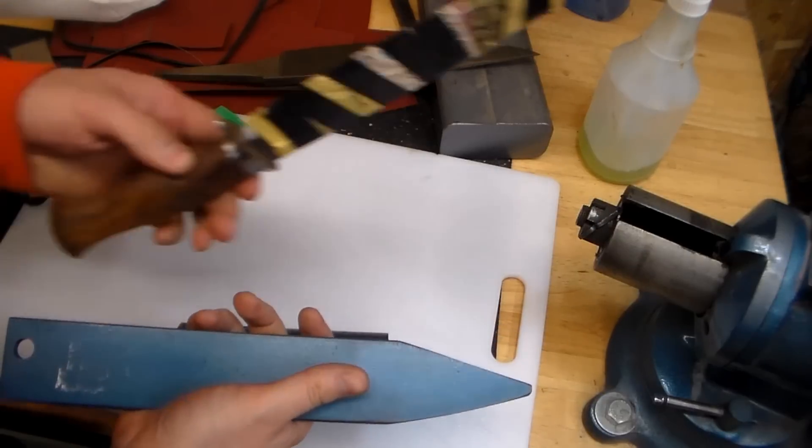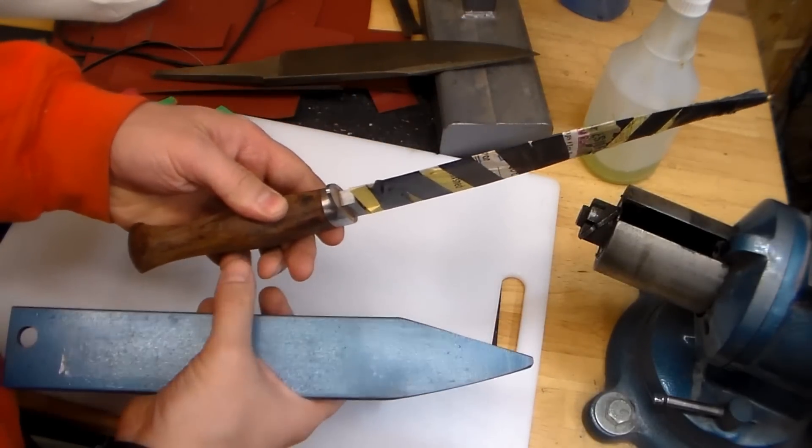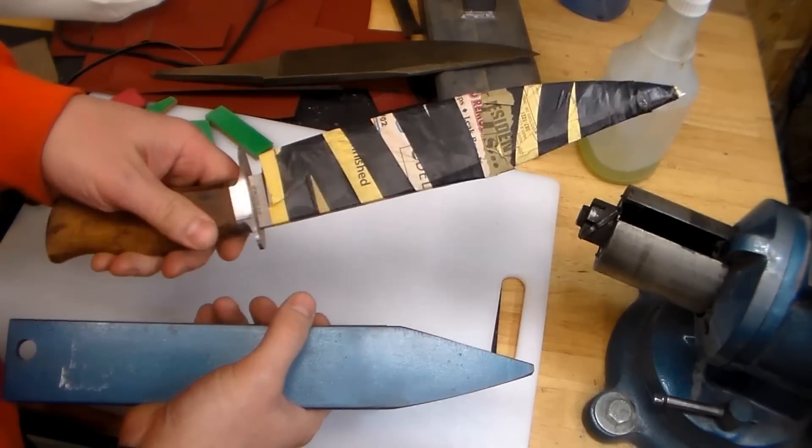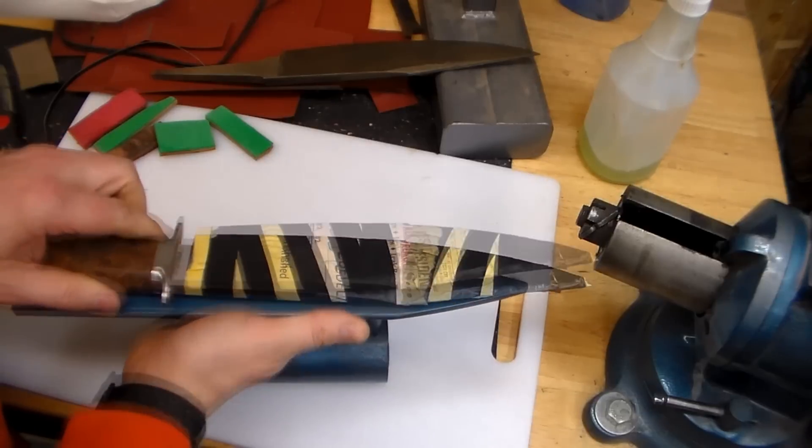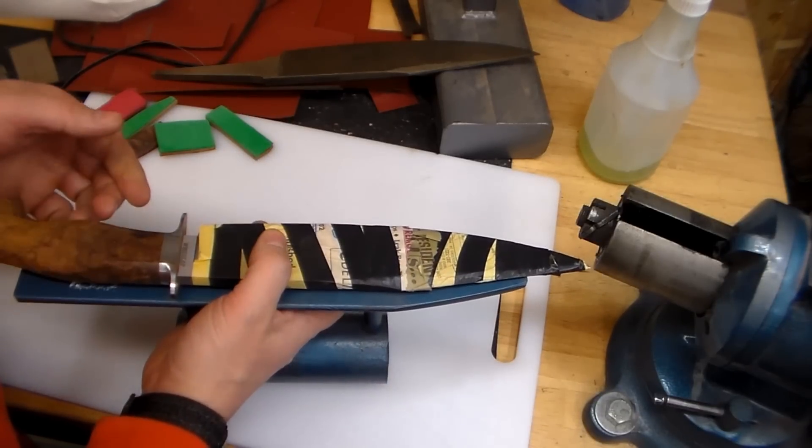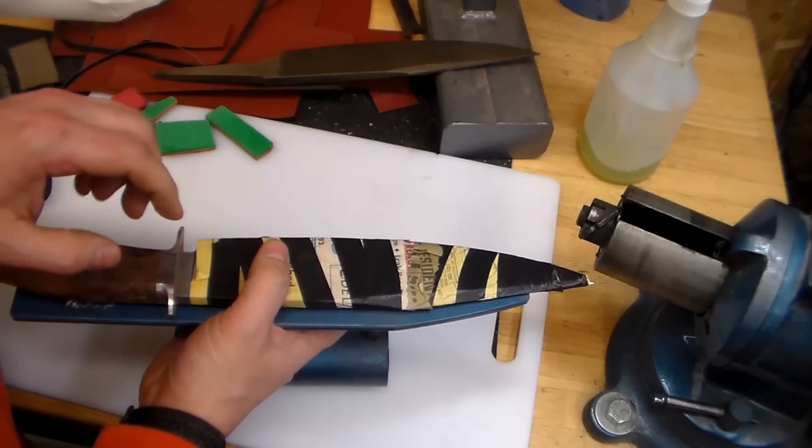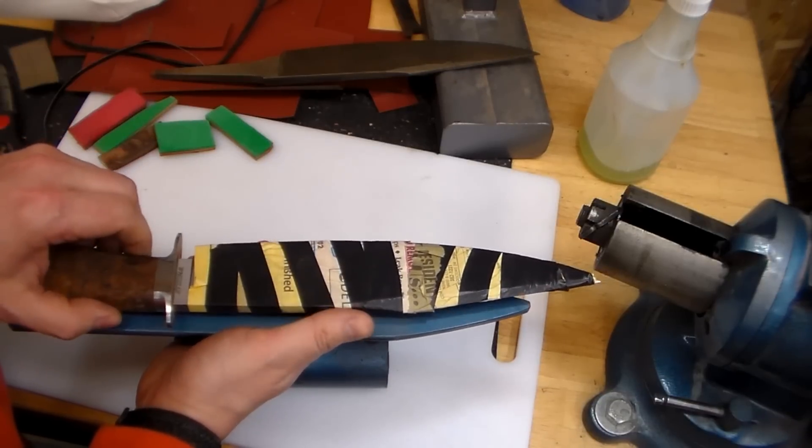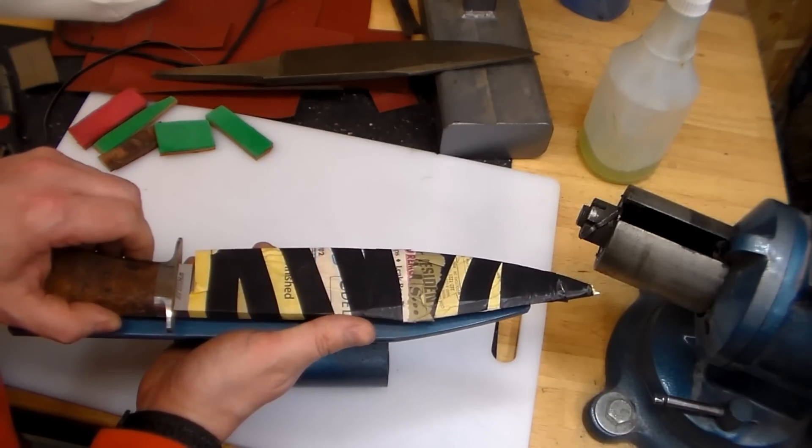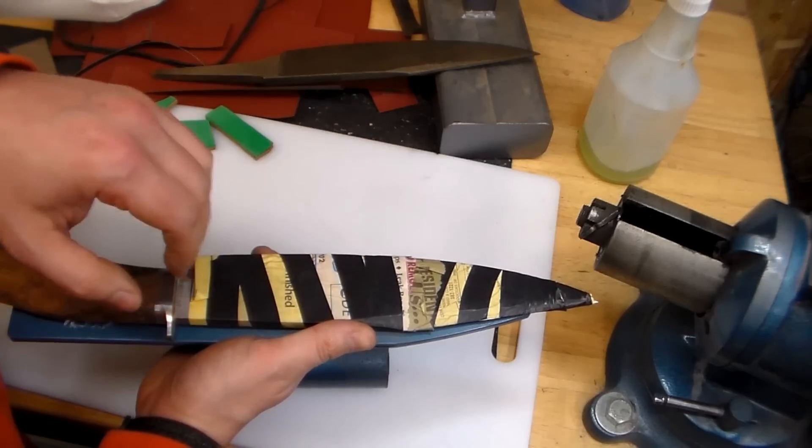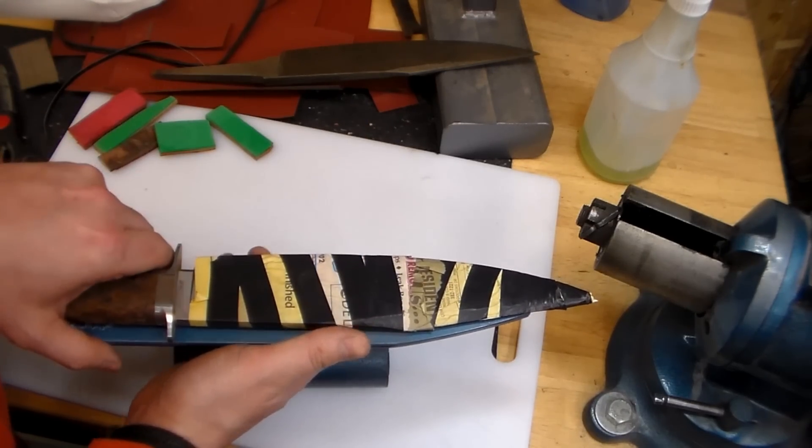Where the rub comes in is once we have a handle on here, and it completely changes the dimensions. We don't just have a flat blade anymore, we can't just clamp it on here so easily. That's what this video is about, is a simple solution to securely clamping a blade like this down with a finished handle, so we can do touch-up work on the blade.